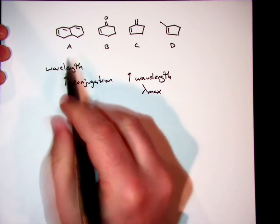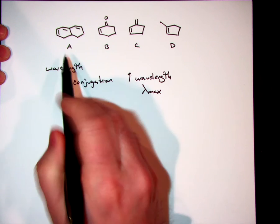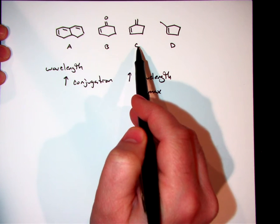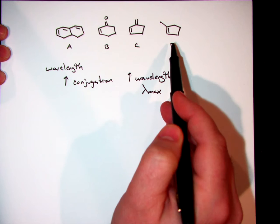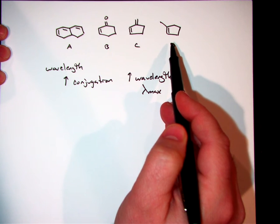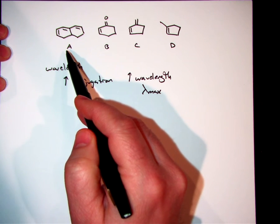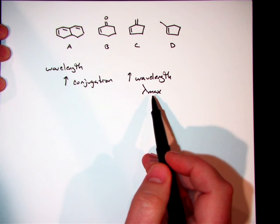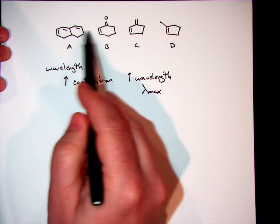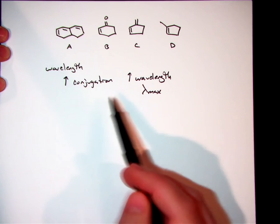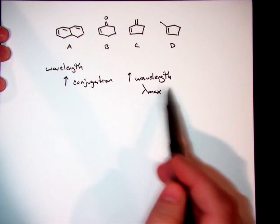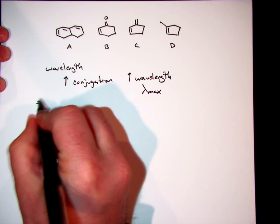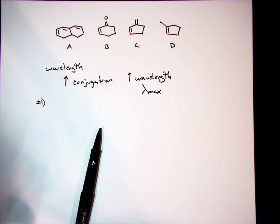If we compare these four different compounds, A has three double bonds that are in conjugation, B and C both have two double bonds that are in conjugation, and D just has an isolated alkene. So A is the longest conjugated system and is the one that's going to have the largest lambda max. Because it has the longest conjugated system, that's going to correlate to the longest wavelength that we're going to experience. So for question number one, the answer was A.